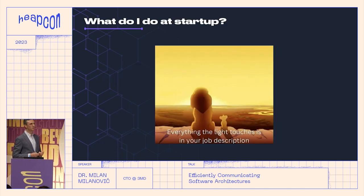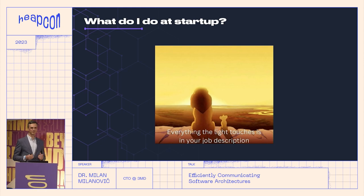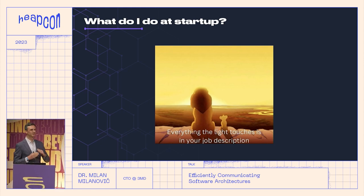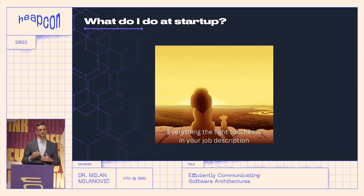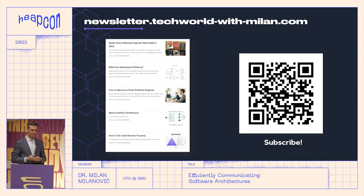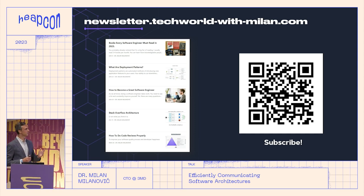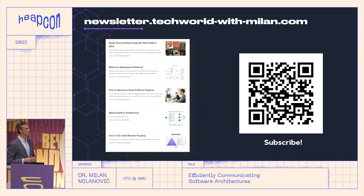When people ask me what I do at a startup, I do a lot of things, but it is the interconnection of people, processes, technology, and business — really different kinds of stuff. I also write a lot, mostly on social networks and my newsletter. You can subscribe here if you want. I have around 10 million readers every month.